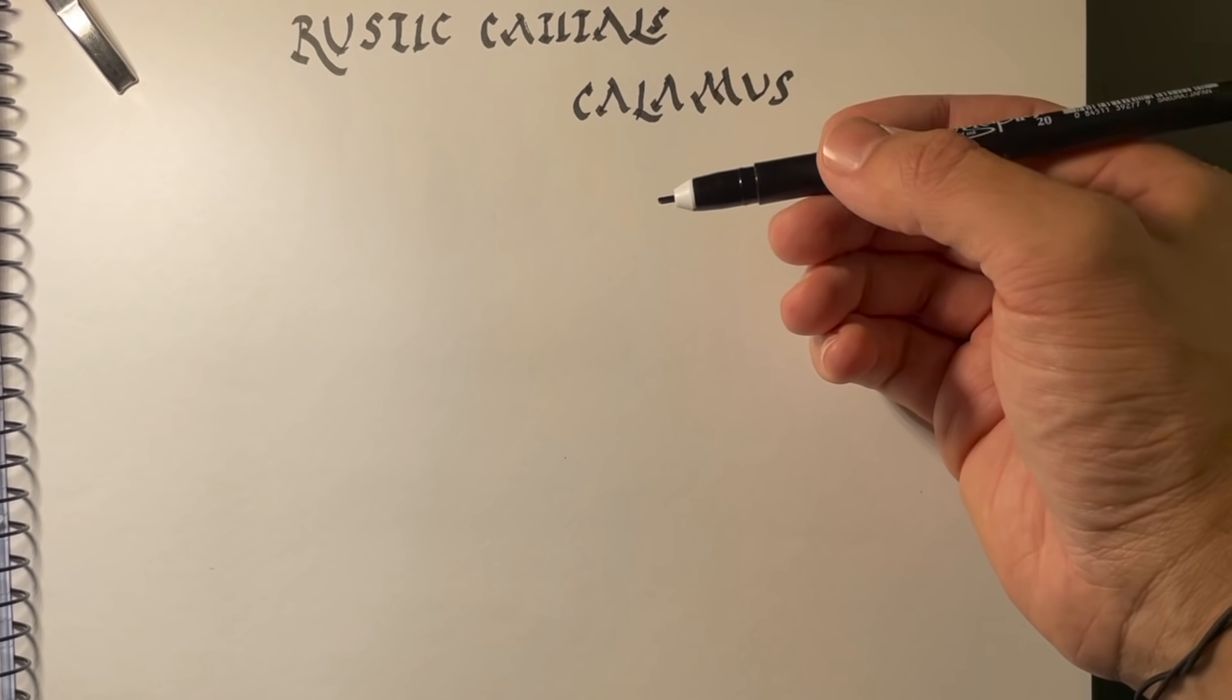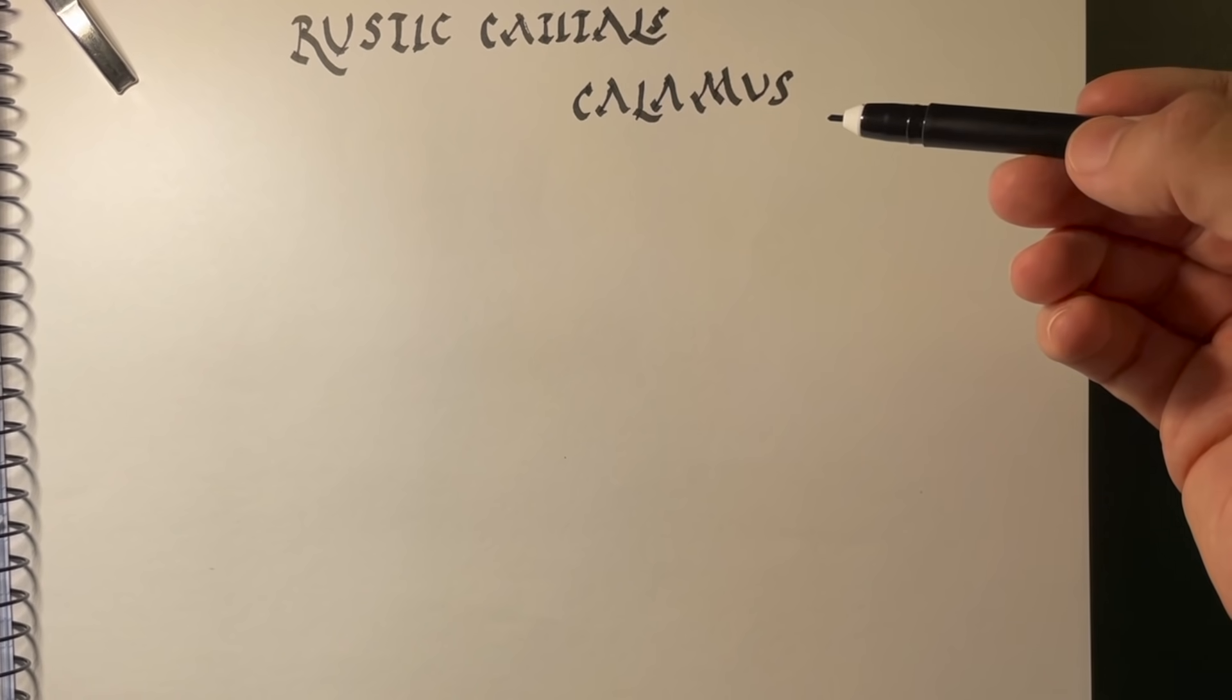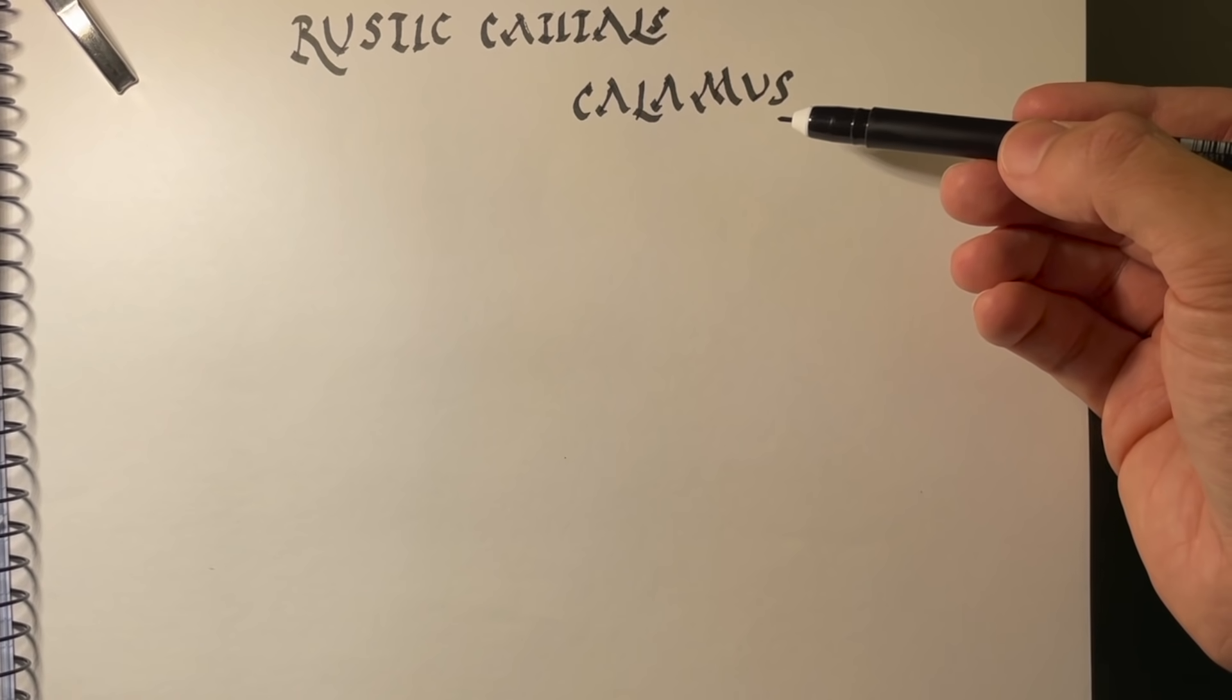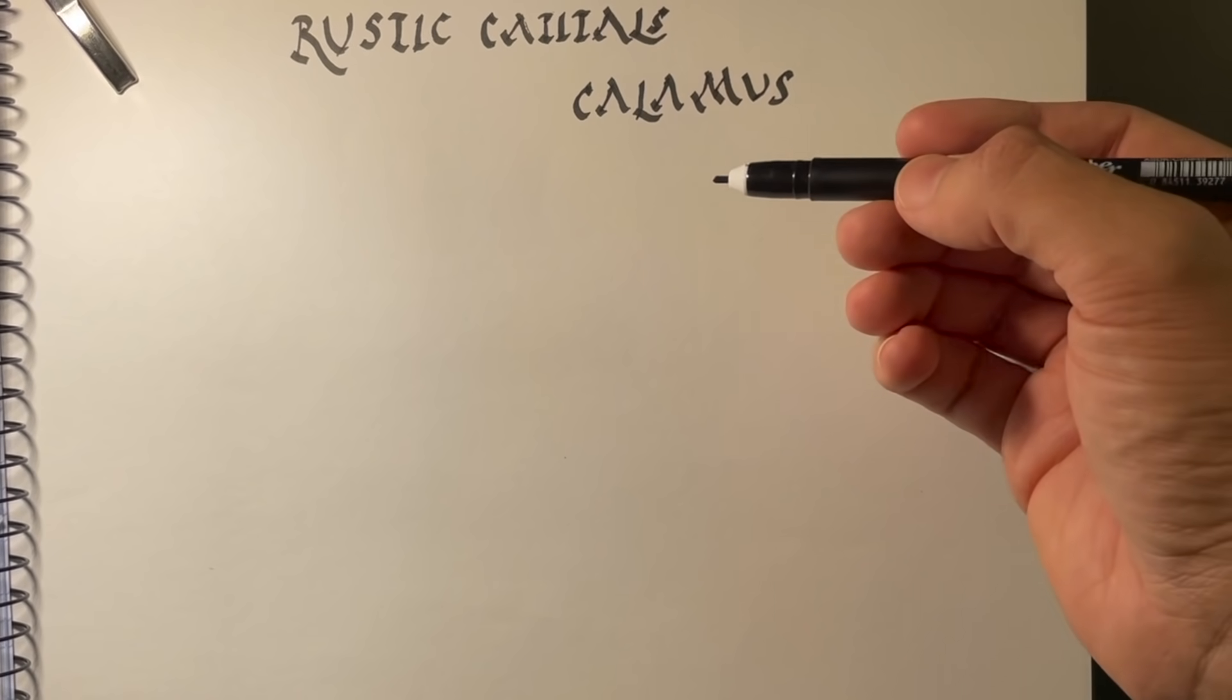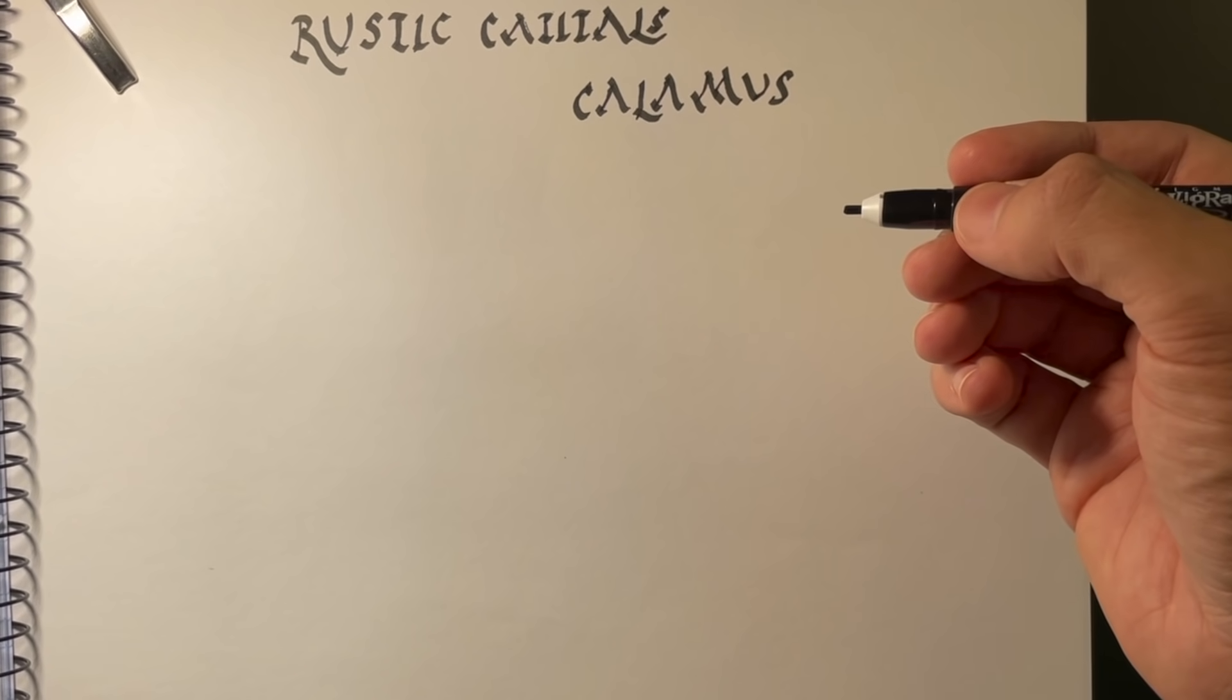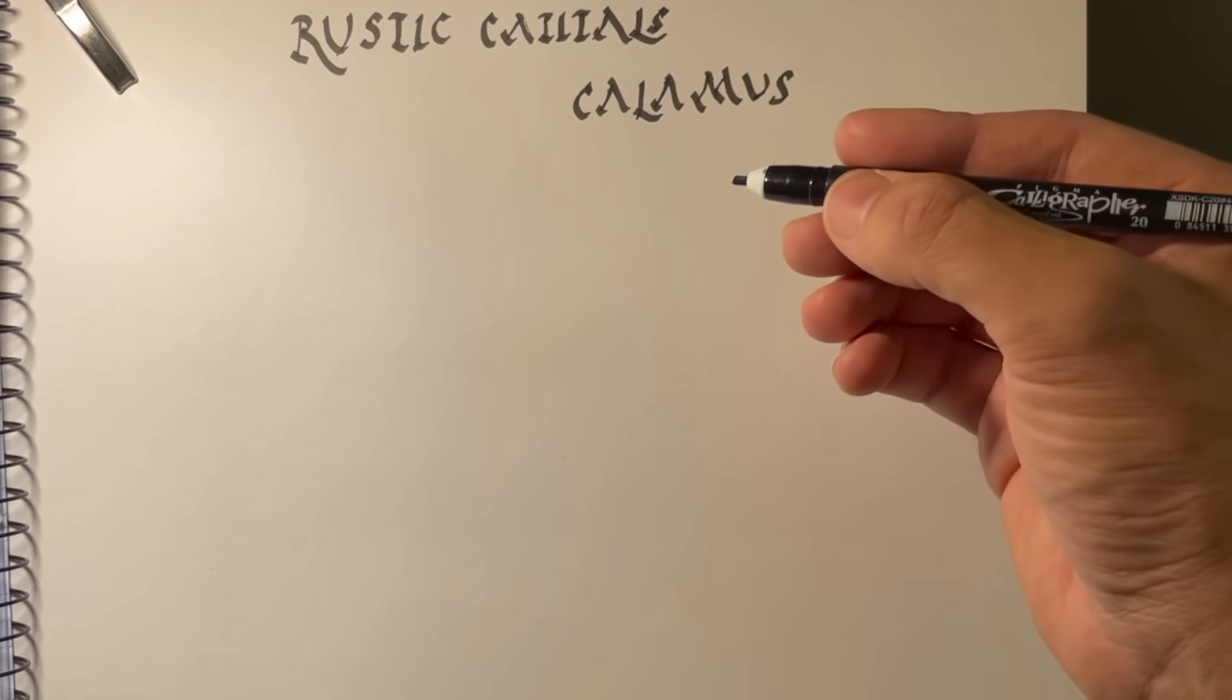Now, I'm using a calligraphy pen because it gives me this different form. As Stefano Vittori explains in his video, the rustic capitals are rather fluid. They really shouldn't be very sharp. And I am new at this. I'm not particularly skilled at doing this yet. He's an expert at it. So, that's why you should definitely see his video.